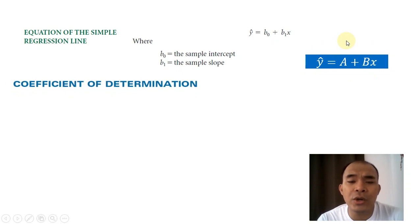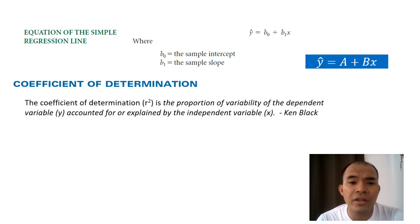And then another concept in simple linear regression is the coefficient of determination. So the coefficient of determination, or simply r squared, is the proportion of variability of the dependent variable y accounted for or explained by the independent variable x. This is the definition by Ken Block. So normally the coefficient of determination is used to represent how good is your model.